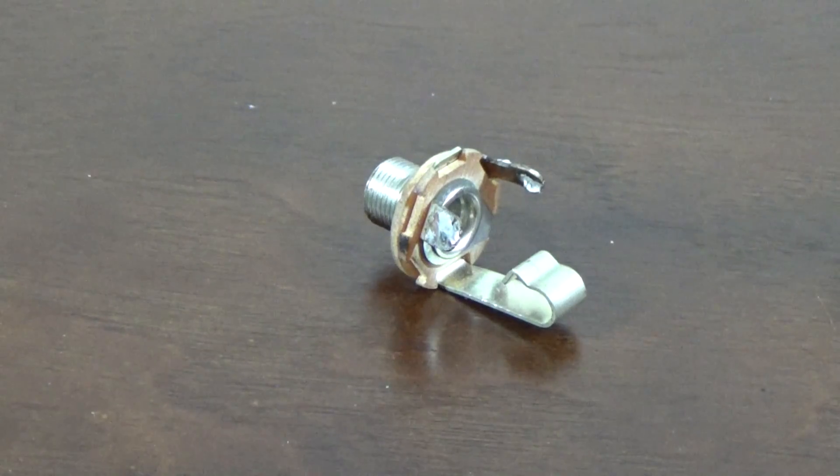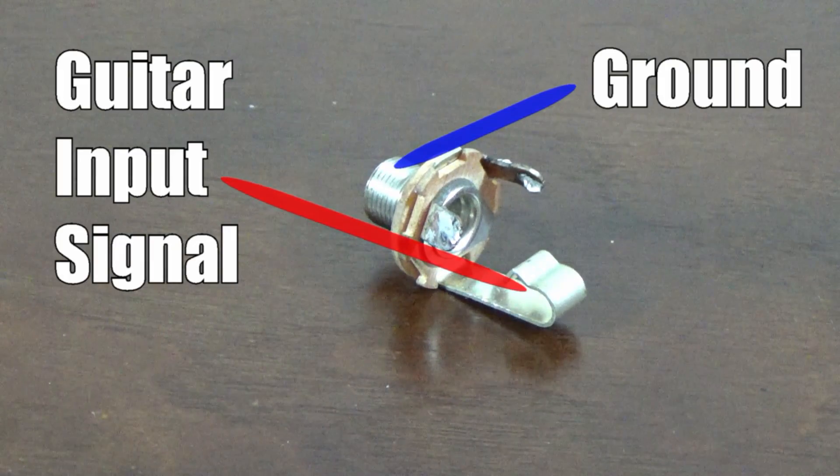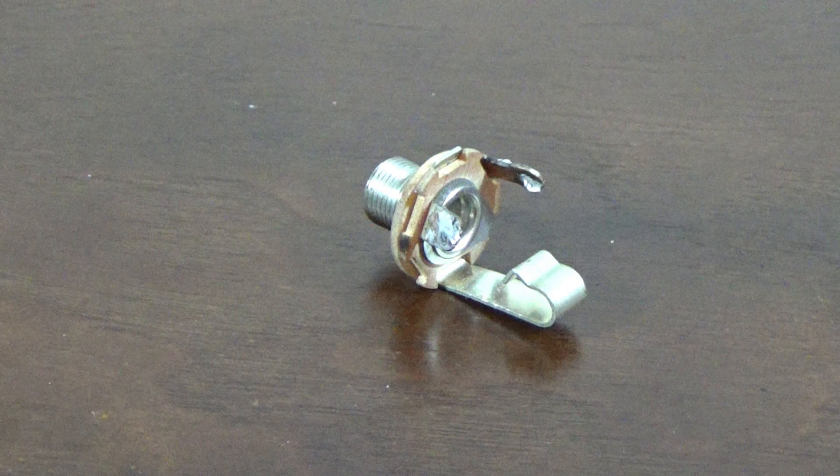The mono jack has two connections. One will be used for the guitar's input signal and the other is for ground. It's critical to be able to determine which connection is the ground and which one is the signal.